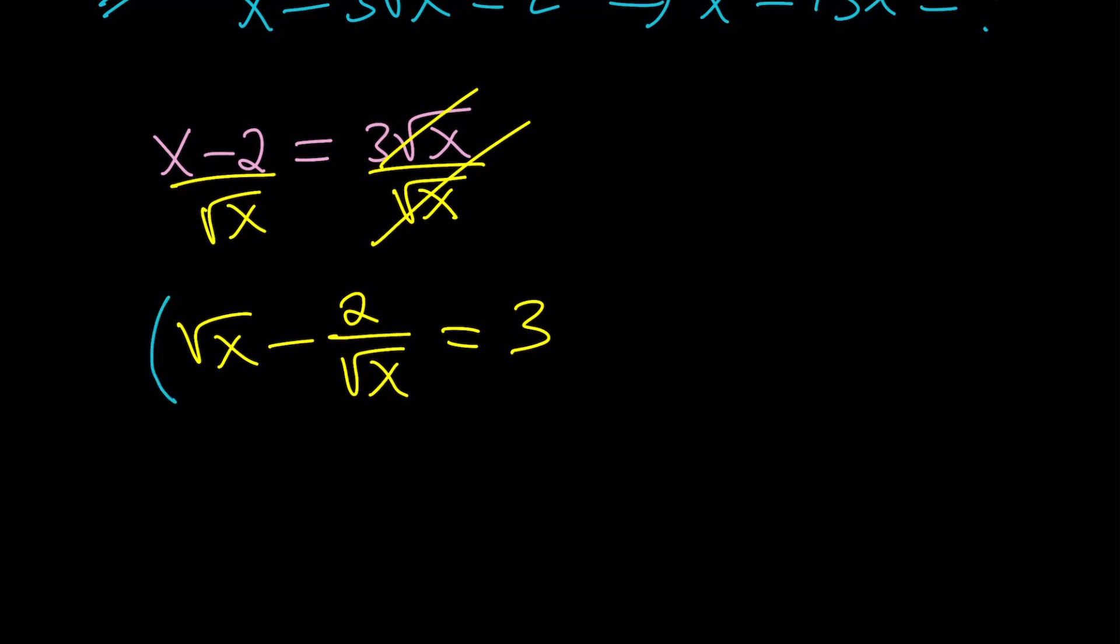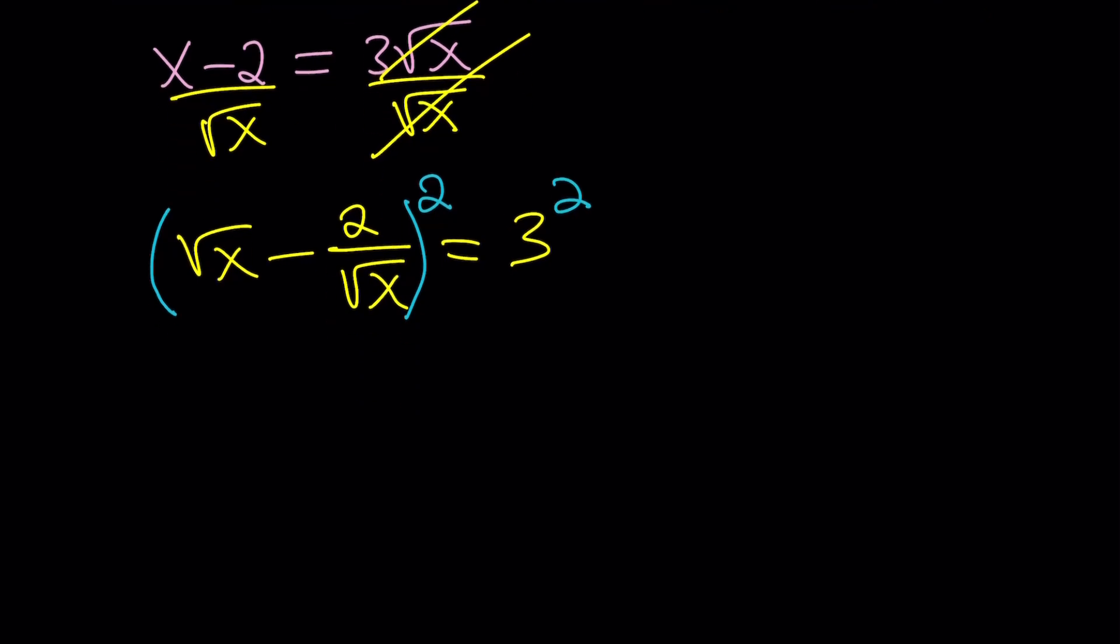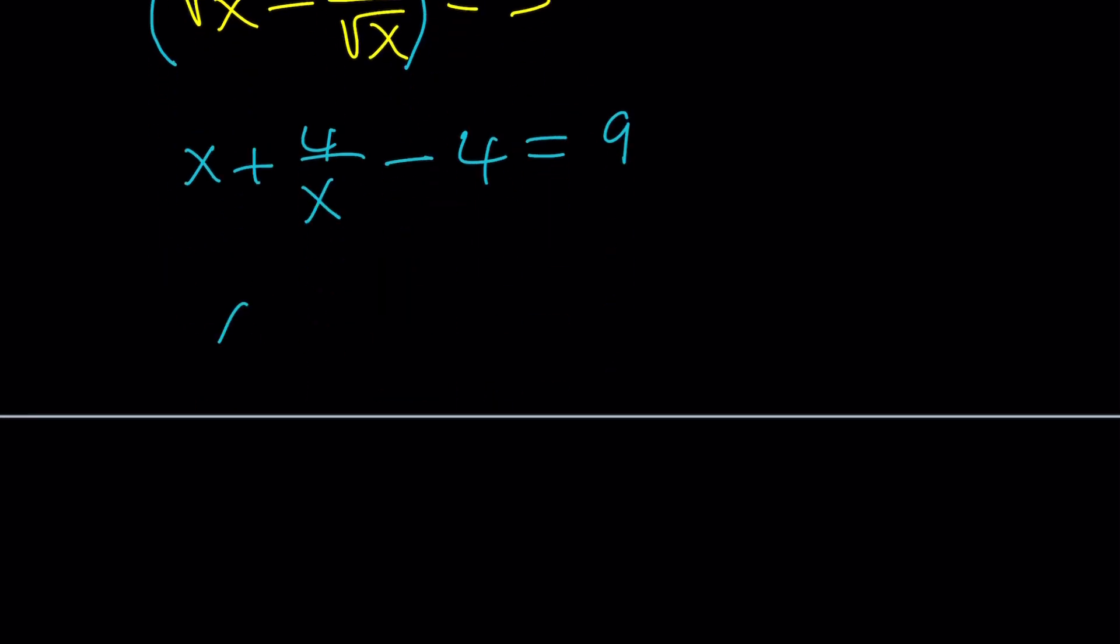So we're given this equation, obviously, and it's true for a single value of x which is real. But let's go ahead and square both sides and see what happens. When you square this, you're going to get x plus 4 over x. I do the a squared plus b squared first, minus 2ab is going to give me 2 times 2, which is 4, and this is 9. If you add 4 to both sides, you're going to get x plus 4 over x equals 13.